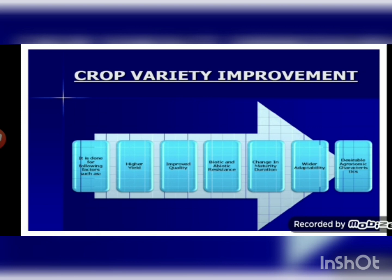Biotic and abiotic resistance: crop production can go down due to disease, insects, and nematodes — these are biotic factors. Abiotic factors which harm crops are drought, salinity, water logging, heat, cold, and frost. Varieties of crops which resist these stresses can improve crop production. This can be achieved by choosing the best quality seeds and by hybridization or cross-pollination between two different varieties to obtain new crops with better resistance.